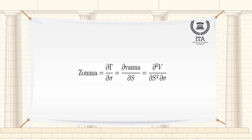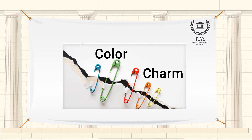Several names such as Vega and Zomma are invented but sound similar to Greek letters. The names color and charm presumably derive from the use of these terms for exotic properties in quantum mechanics.